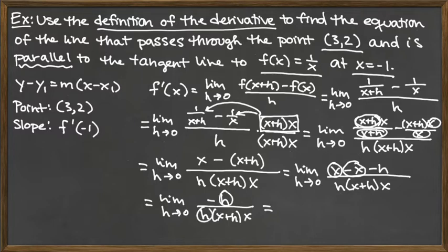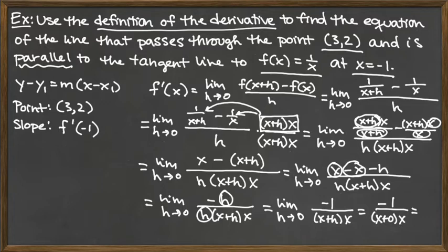Now that h cancels on the top and the bottom, leaving me on the top with just the placeholder -1 so I can keep that negative sign. And on the bottom, I've got (x + h) times x. Since that h is finally canceled out, I can go ahead and compute the limit by plugging in 0 for h. I drop my limit notation, and I'm left with -1 over x + 0 times x, which would be -1 over x², which is x squared.